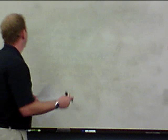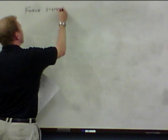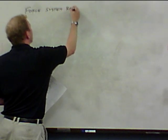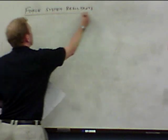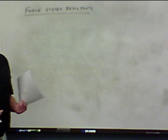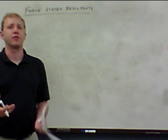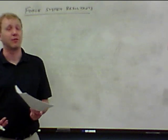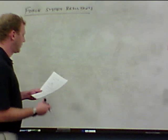Alright, beginning half of chapter 4 — we're talking about force system resultants. The entirety of chapter 4 is about force system resultants, which is essentially taking all of the forces acting on a given body and reducing those into a single resultant force and a single resultant moment. We haven't talked about moment yet in this course, so we'll do a little bit of a review.